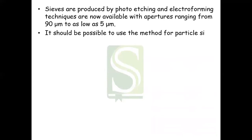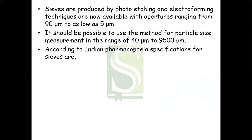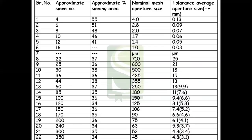Sieves are produced by photo etching and electroforming techniques, now available with aperture ranging from 90 micrometers to as low as 5 micrometers. The method can be used for particle size measurement in the range of 40 to 9500 micrometers. According to Indian Pharmacopoeia, specifications for sieves include the sieve number, aperture size, sieving area available, and tolerance for average aperture size.